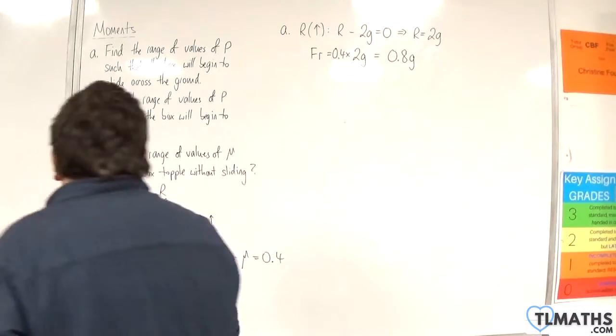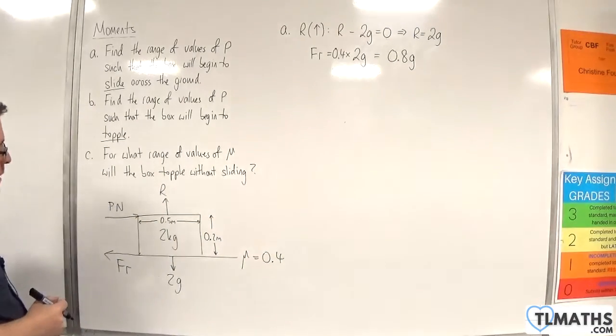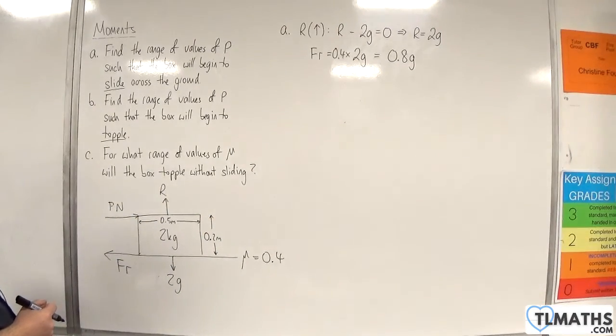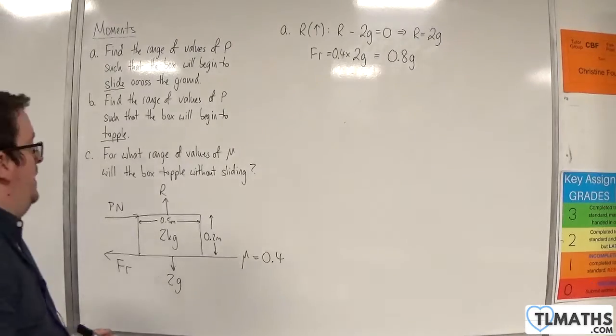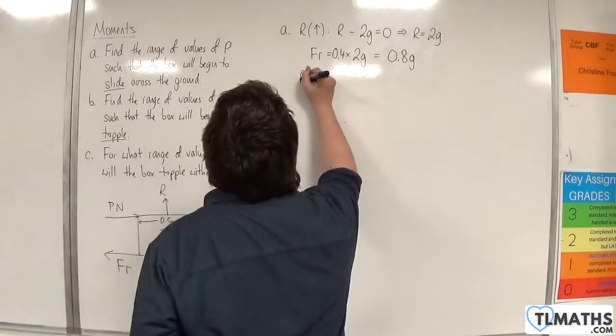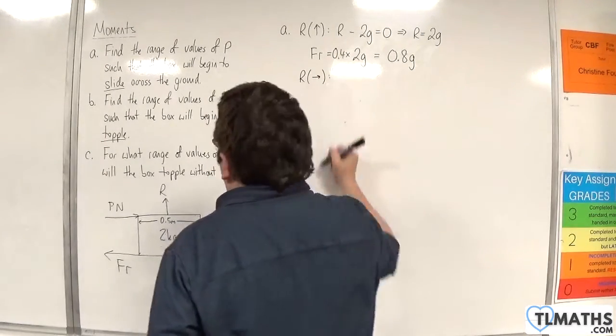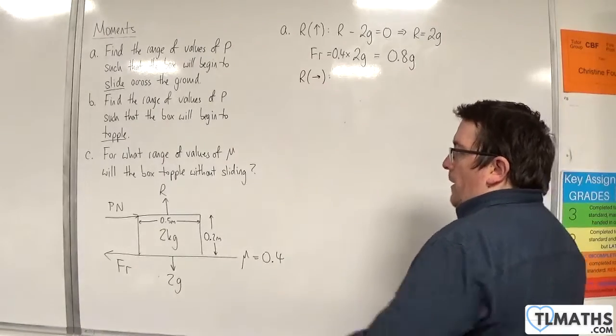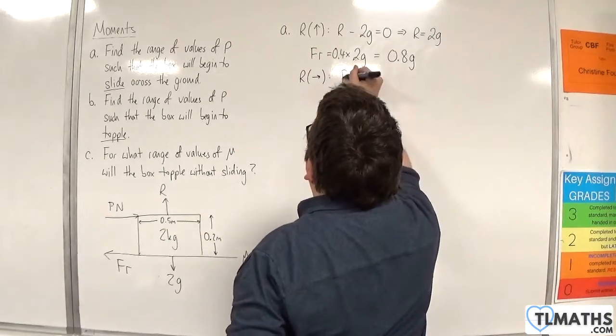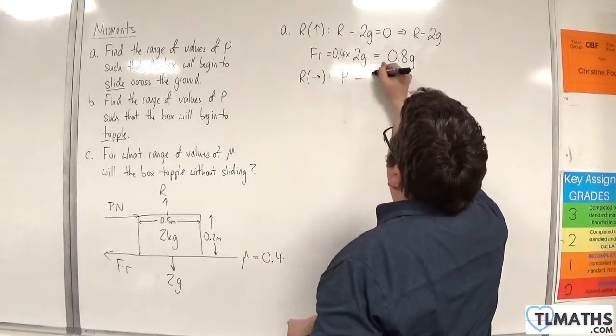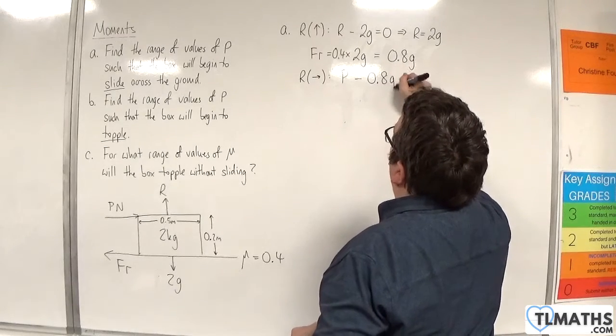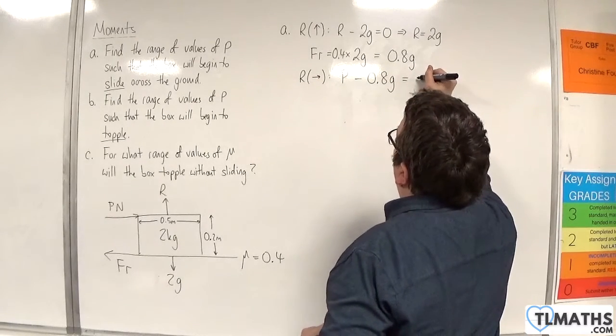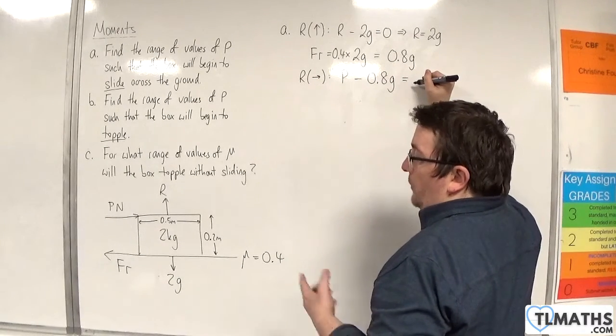Now I can look at resolving horizontally. Resolving horizontally, I have the p newton force, so p, take away the friction, 0.8g, and that's got to be equal to the mass times acceleration.